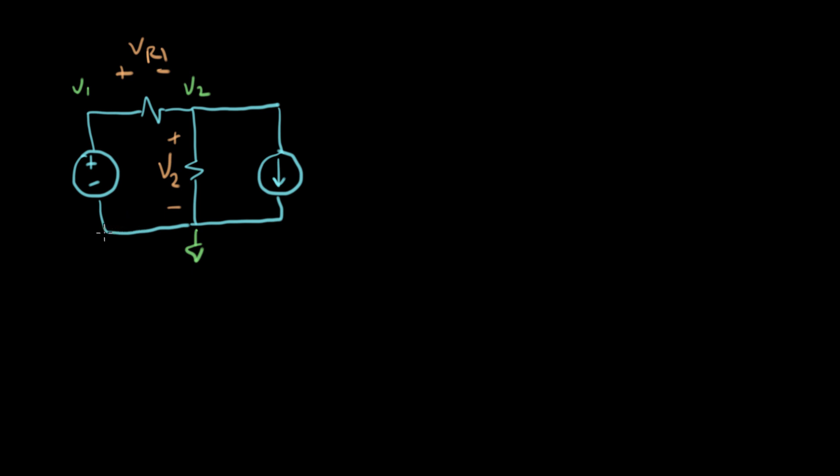And now we're going to write KVL starting from this point and going around the loop in this direction. And what we have is, let's get all our labels on here, the loop voltages. We start with a rise of plus VS, then we take away VR1, and then we take away V2. And that equals zero. So that would be the KVL equation for this circuit.